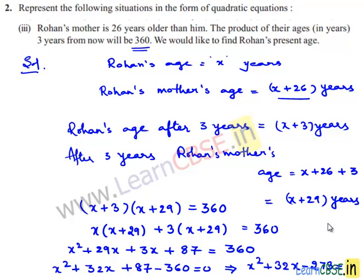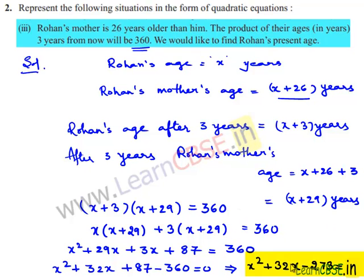Therefore, the given condition can be expressed in the form of the quadratic equation as x squared plus 32x minus 273 equals 0, where x is Rohan's present age, which can be found using the roots of this equation.